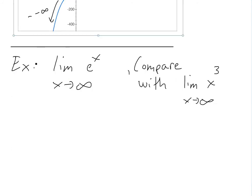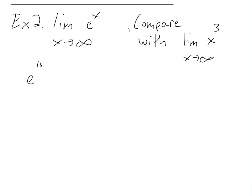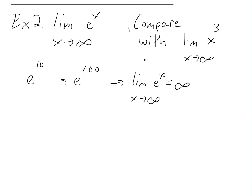Now for Example 2, we look at the limit as x approaches infinity of e^x, the exponential function, and compare it with the limit as x approaches infinity of x³. If you put in e^10, you get a really large number; e^100 is even larger — all you're doing is getting larger and larger. So the limit as x approaches infinity of e^x equals infinity, similarly to Example 1.